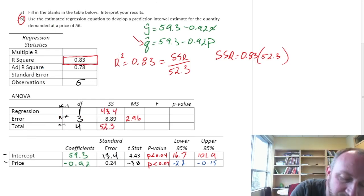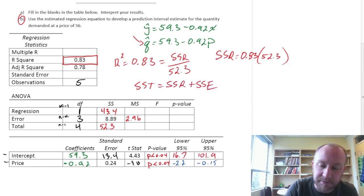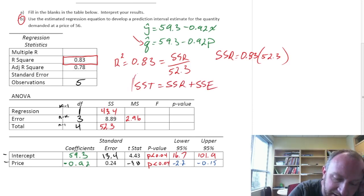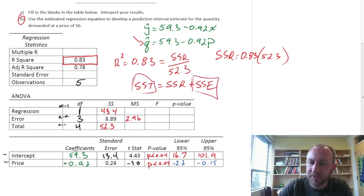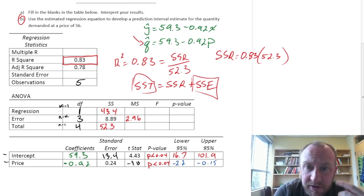Or, we could have also taken advantage of this relationship, that SST is SSR plus SSE. And so here we had SST, and we had SSE. So we could solve for the other. Okay, so we have all of our sums of squares.